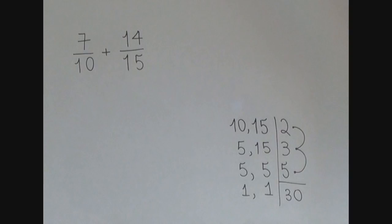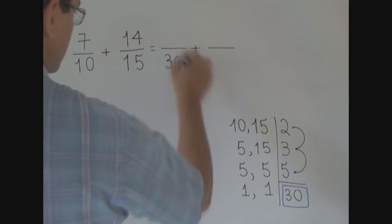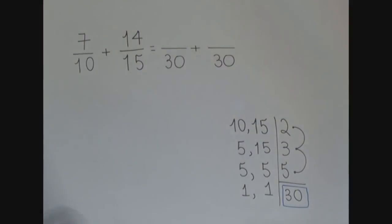30 is going to be the new denominator of two new fractions that will be equivalent to the fractions we have. So, now, we write two new fractions with 30 as their denominators.